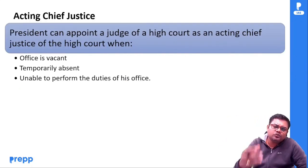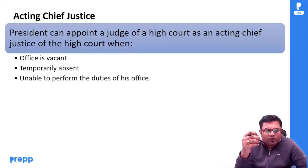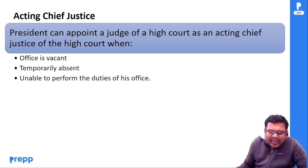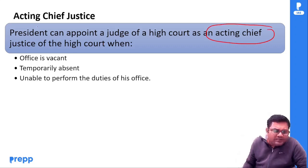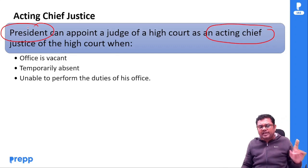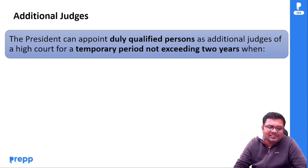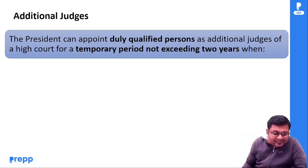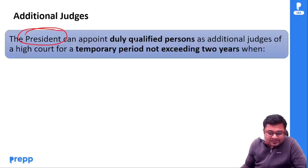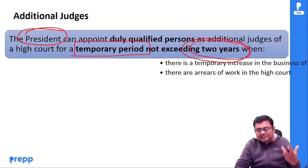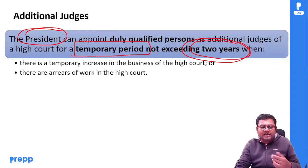Acting Chief Justice — मान लो जो Chief Justice of state का office vacant है, या absent है, या duties perform नहीं कर पा रहे — तो President can appoint a judge of High Court as Acting Chief Justice। यह power President के पास है, CJI के पास नहीं है। Then additional judges — President appoint करेंगे, purely qualified person, for a temporary period not exceeding two years। Maximum 2 साल के लिए additional judge बनाया जा सकता है — यह temporary period के लिए होता है जब High Court का business load बढ़ गया हो।